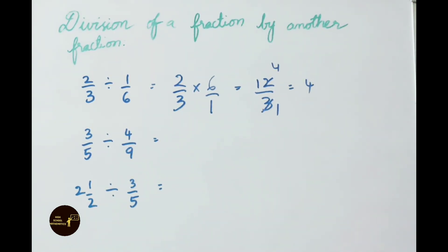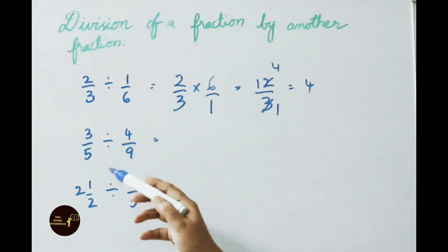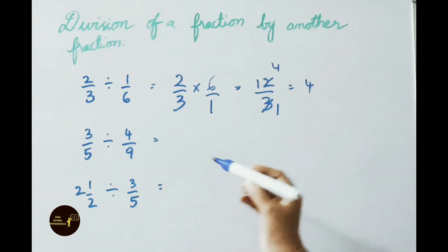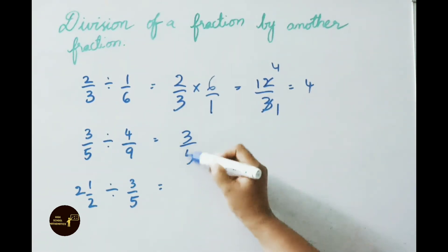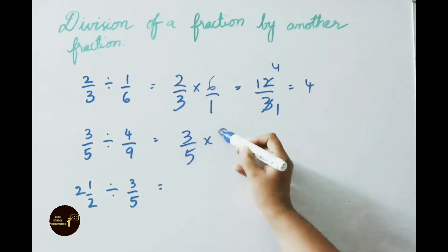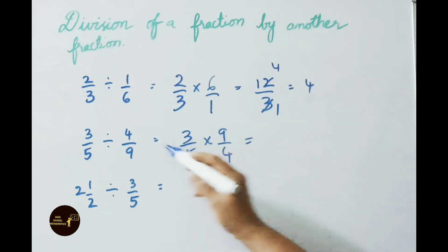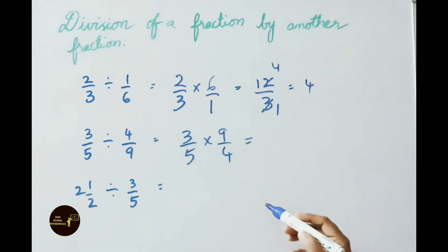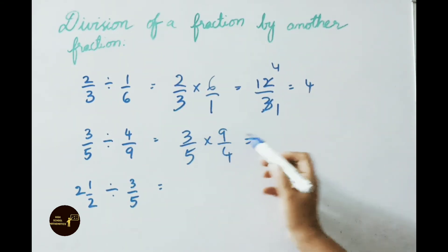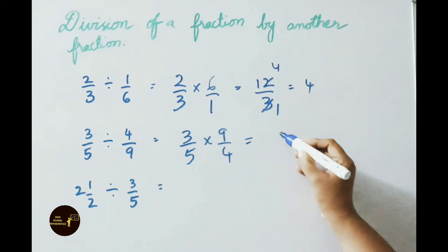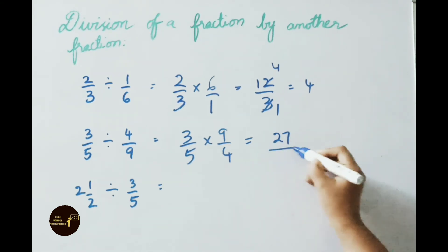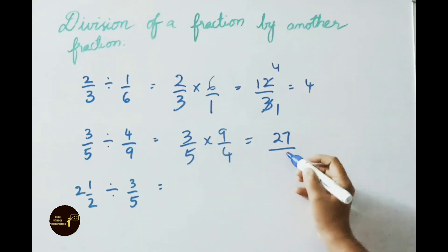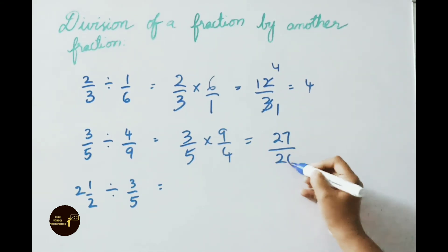See the next example: 3/5 divided by 4/9. Write down 3/5 × reciprocal of 4/9, which is 9/4. Multiply the numerators: 3 × 9 = 27, denominators: 5 × 4 = 20. So the answer is 27/20.